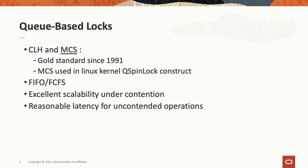The key queue-based locks are CLH and MCS. These have been the gold standard for queue-based spin locks since about 1991. MCS is used in the Linux kernel, for example, as the lowest level mutex construct in the system. Both of these locks are FIFO fair, they show excellent scalability under contention, and they have reasonable latency for uncontended operation. For our purposes today, we'll focus on MCS for comparison.